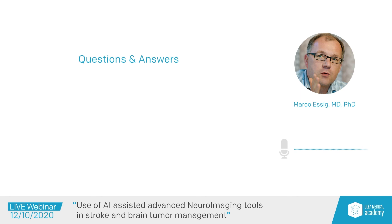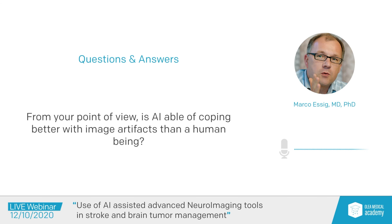A last question: is artificial intelligence able to cope better with image artifacts than a human being? That's a good question. It depends — if you have a very experienced person who has read thousands of exams and knows exactly what kind of artifacts their own scanner produces, the individual is probably still better than an AI tool. On the other side, AI tools can already identify artifact patterns quite well. They can be helpful, and of course the final decision has to be made by the human, but they can definitely help in identifying artifacts.